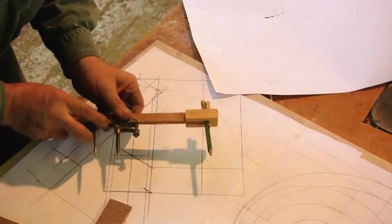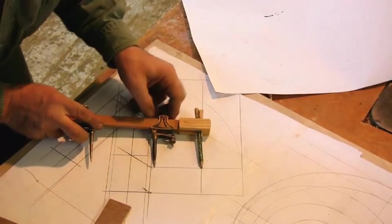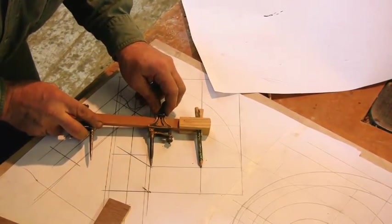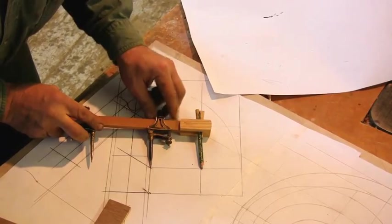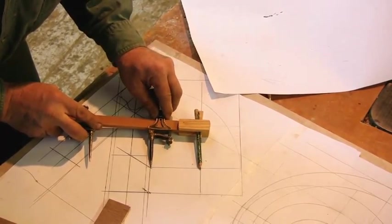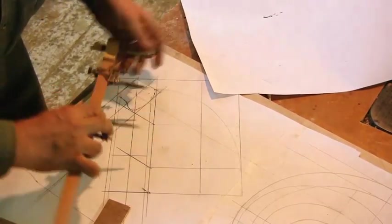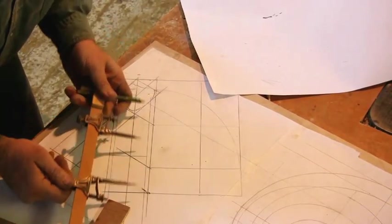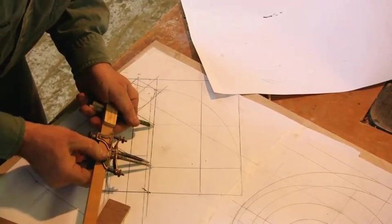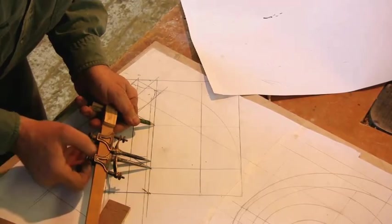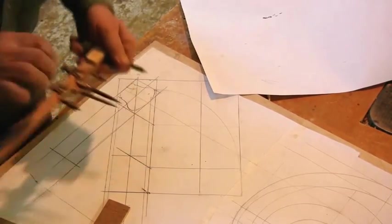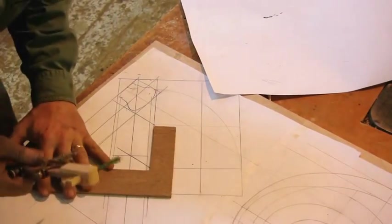Then I'll reset my trammels to do the inside ellipse. That's half of the minor axis of the smaller ellipse right there. And that's half of the major axis of the smaller ellipse. And I'll draw the other ellipse.